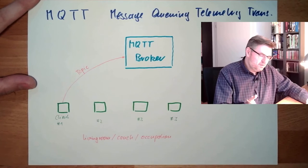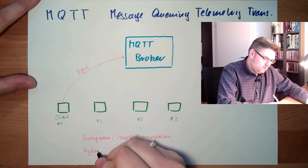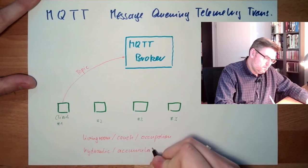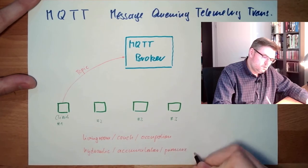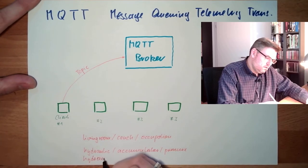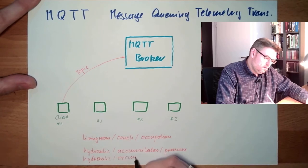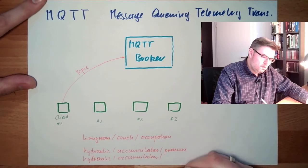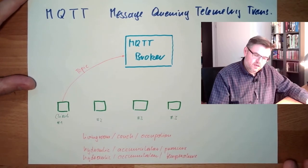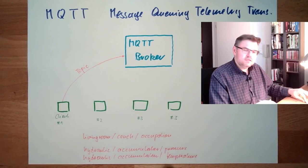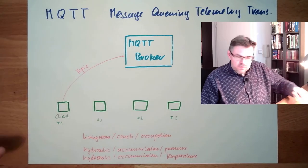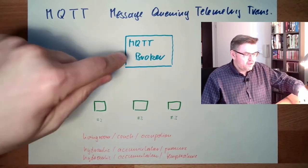A bit more serious example: 'hydraulics slash accumulator slash pressure', and there might be another topic 'hydraulics slash accumulator slash temperature'. This is to structure things a little bit. Topic names are usually structured. These topics are published by a client to the MQTT broker.